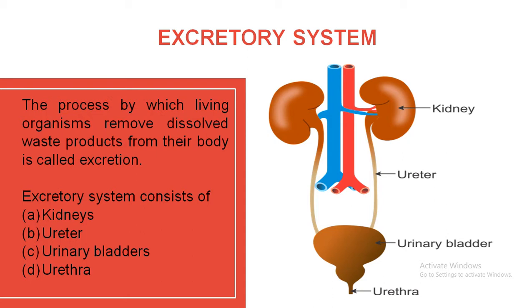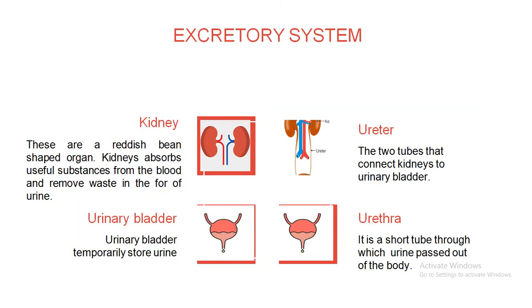The second organ is the ureter. Since there is a pair of kidneys, there is definitely a pair of ureters. These two thin tubes connect the kidney and the urinary bladder. The function of the ureter is to transfer the waste product from the kidney to the urinary bladder.